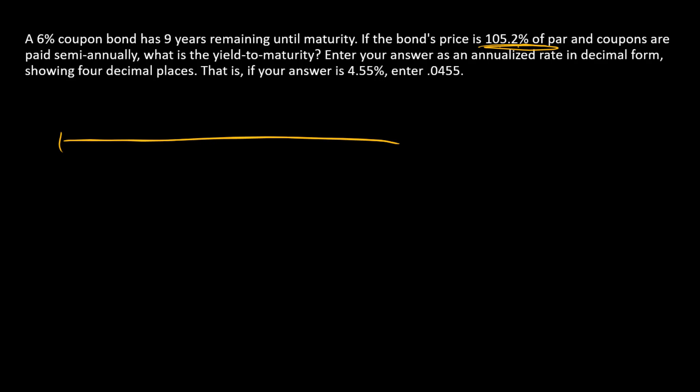So we'll start there. On our timeline, we're going to have a par value repayment out here at the end of 100, and we're going to have a price of 105.2.